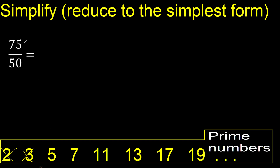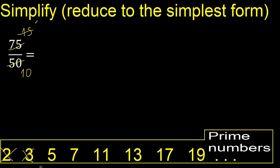Divided by 5: 75 divided by 5 is 15, and 50 divided by 5 is 10. These can be divided by 5 again: 15 divided by 5 is 3, and 10 divided by 5 is 2.